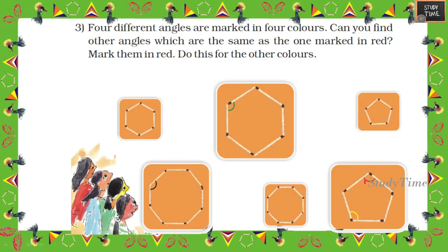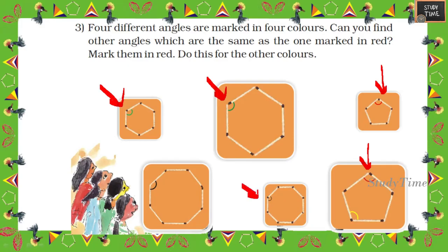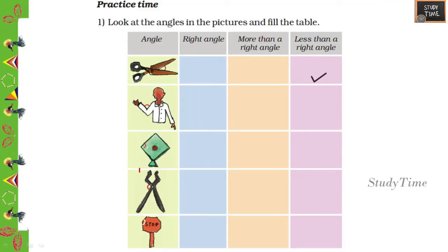Four different angles are marked in four colors. Can you find other angles which are the same as those marked in red? This angle, this angle, and this angle are almost equal. This angle and this angle are also equal.